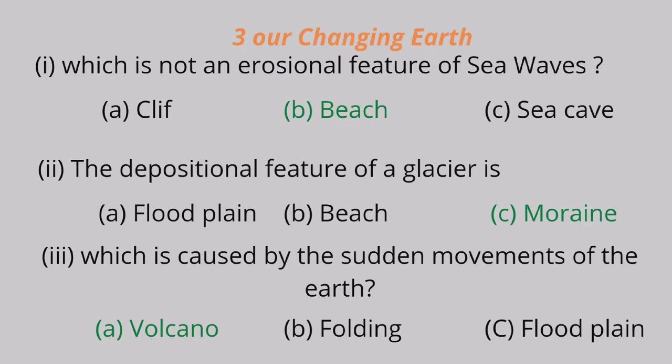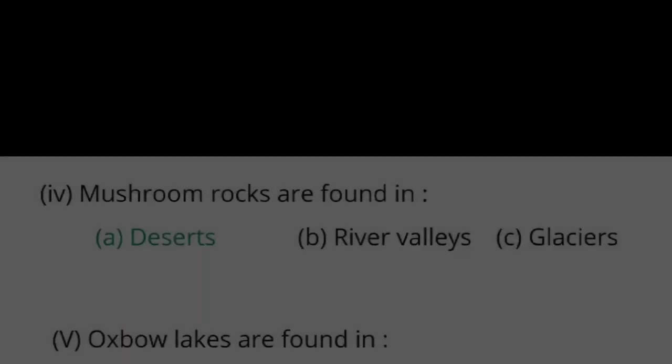Question 3: Which is caused by the sudden movement of the earth? A. Volcano, B. Folding, C. Flat plain. Volcano is the correct answer.